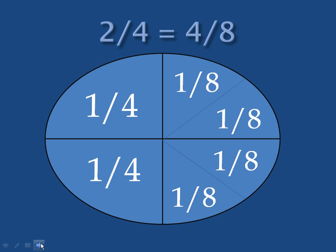Here we see two fourths on one side of the circle, and four eighths on the other side. Two fourths equal four eighths.